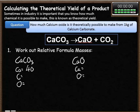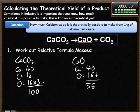First step is to work out our relative formula masses of those two things. CaCO3: calcium is 40, carbon is 12, oxygen is 16, but we need to multiply it by 3. Add those together, that's 100. And then the same thing for calcium oxide. Look at our periodic table, calcium is 40, oxygen is 16. Add those things together, that is 56.